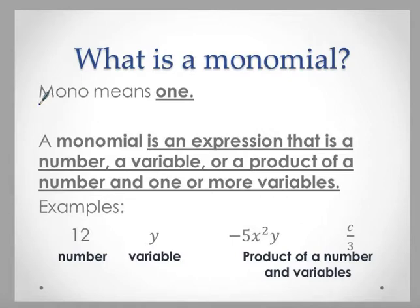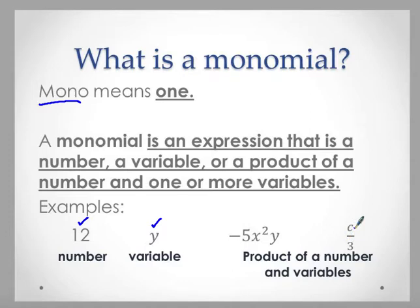The term monomial means that it has one term. What makes up a monomial could be a number, just a variable, or a product of numbers and variables — like negative five times x squared times y. Something like c divided by three is really one third times c, so it's still considered multiplication. As long as we're not dividing by the variable, it's still a product of a number and variables. These are all examples of what a monomial looks like.